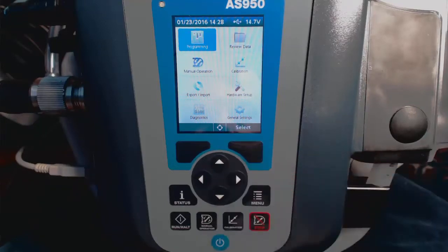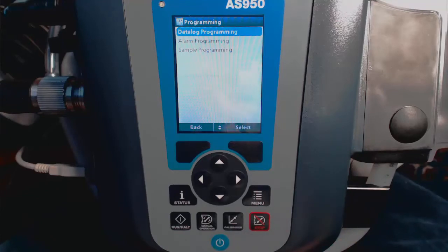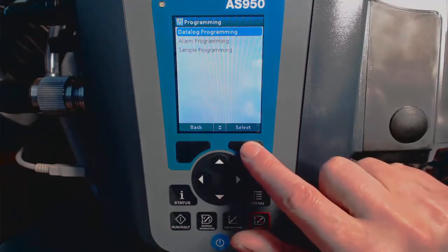So from the main menu, you'll select Programming, then go to Data Log Programming and select it.